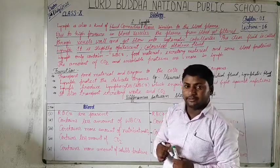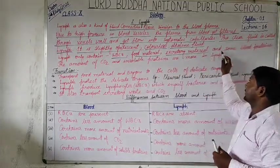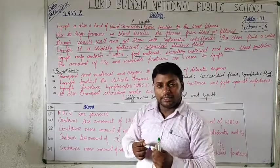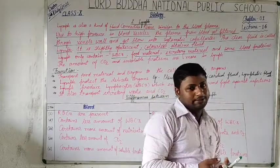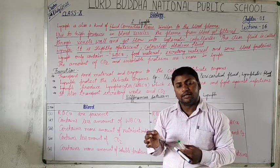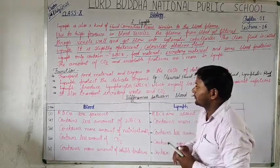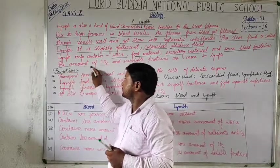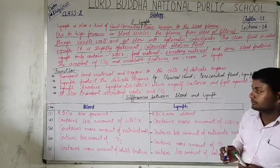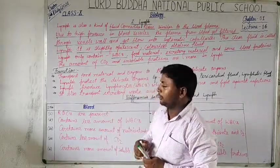Lymph contains only WBCs, food materials, excretory materials, and some blood proteins like globulins. Amino acids such as creatine and arginine are also present in lymph. The amount of CO2 and insoluble proteins are more in lymph — insoluble types of proteins are found in greater amounts in the lymph.